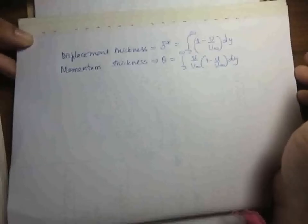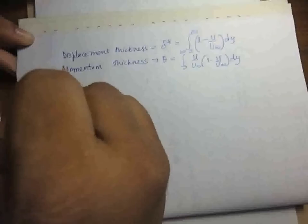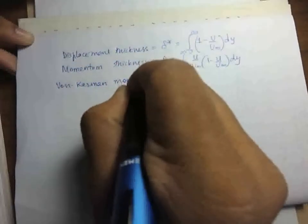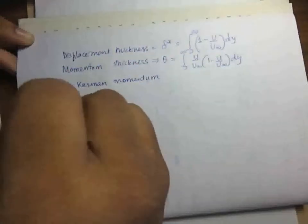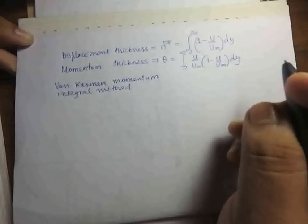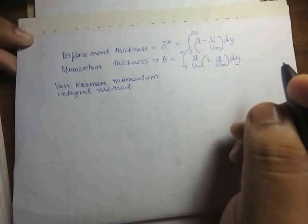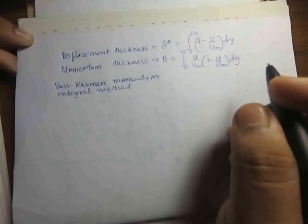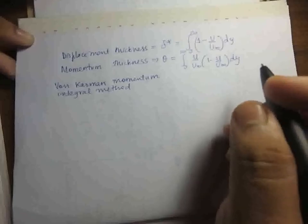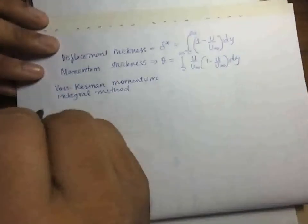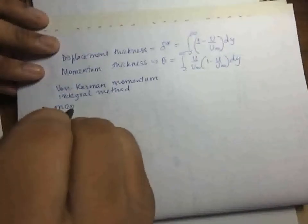With these definitions, we move on to one common momentum integral method, which can help us obtain a relationship between wall shear stress and the velocity profiles. Alternatively, it can also be used to determine the thickness of the boundary layer. Let us begin by using the x-momentum equation for the boundary layer.